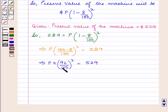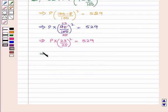Now, 4 × 25 = 100 and 4 × 23 = 92. So, this becomes P(23/25)^2 = 529, which can be written as P × (23/25) × (23/25) = 529.